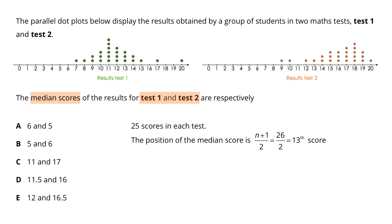In the dot plot for the results for test 1, we notice that the 13th score is above 11, which means that the median score for test 1 is 11.